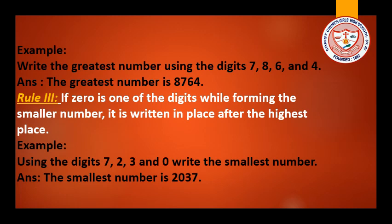If we put 0 in the 1,000s place, the answer will be wrong. Because here we are forming a 4-digit number, and 0 means nothing. If 0 comes first, then the number becomes 237 — a 3-digit number — making our answer wrong. So please remember: whenever you get 0, put it in the place after the highest place.